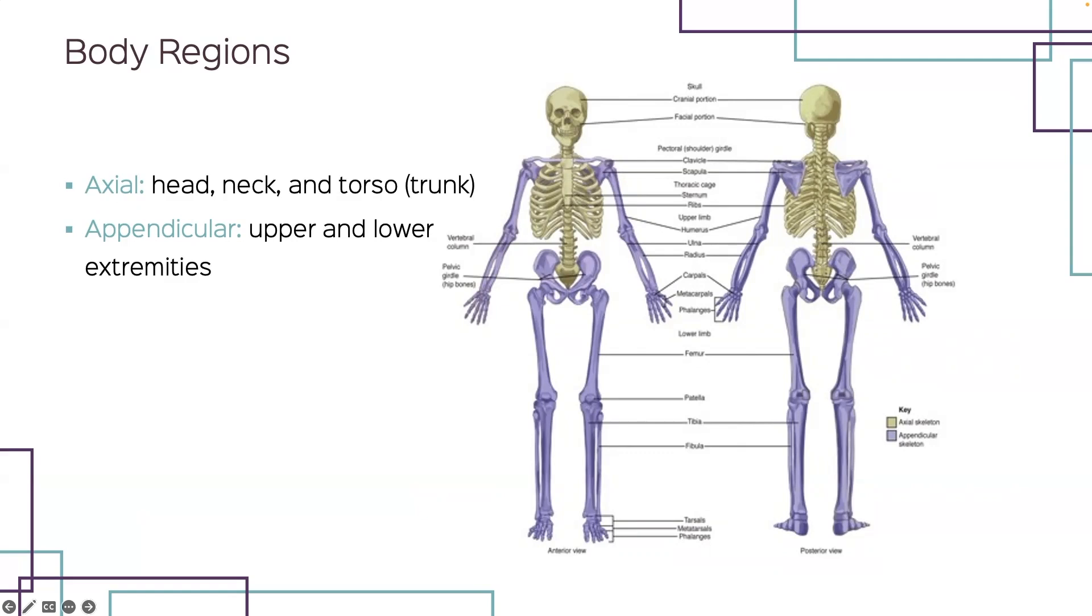Your body as a whole can be divided into two major portions or components: axial and appendicular. Your axial contains your head, your neck, and your torso, basically what is on that center axis. Your appendicular is your upper and lower extremities and also includes your shoulder girdle and your pelvic girdle. In the picture, your appendicular region is all of the purple and your axial is the yellowish bone color.